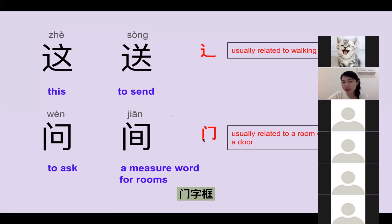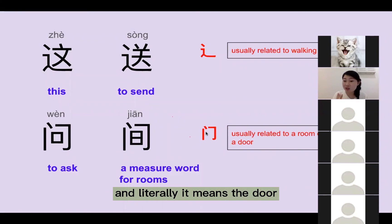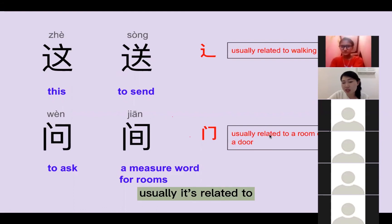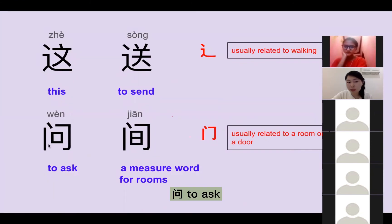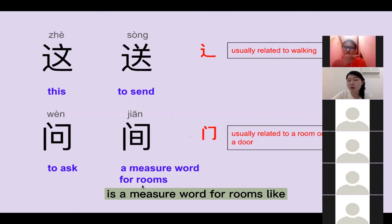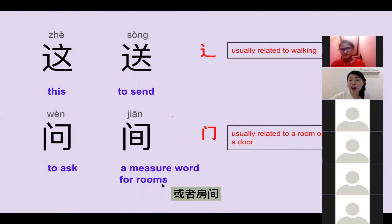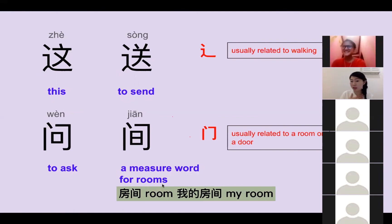The second radical is 门字框。门 literally means the door, but every time you see a character with 门字框, usually it is related to a room or a door — like 问, to ask; 间 is a measure word for rooms, like 一间房子; 或者 房间, 房间 means room, 我的房间, my room.